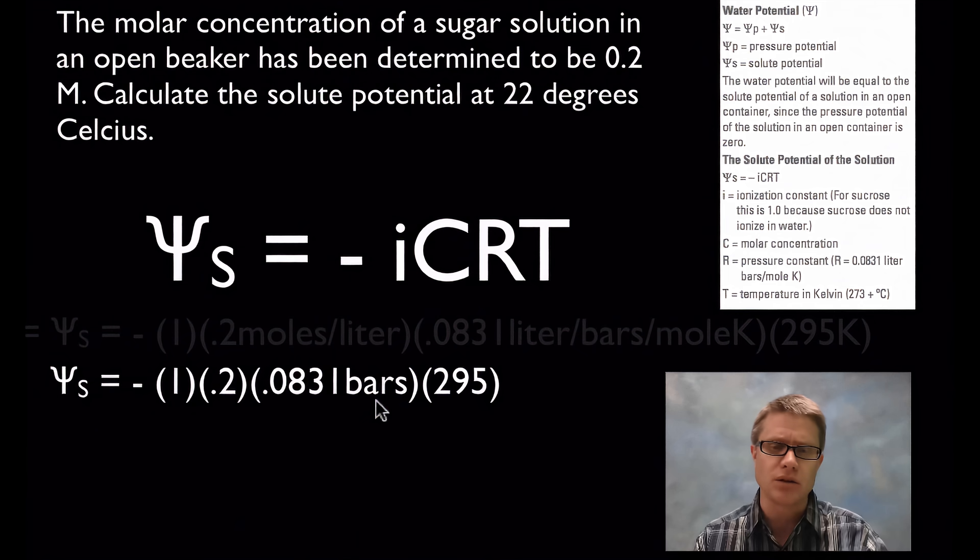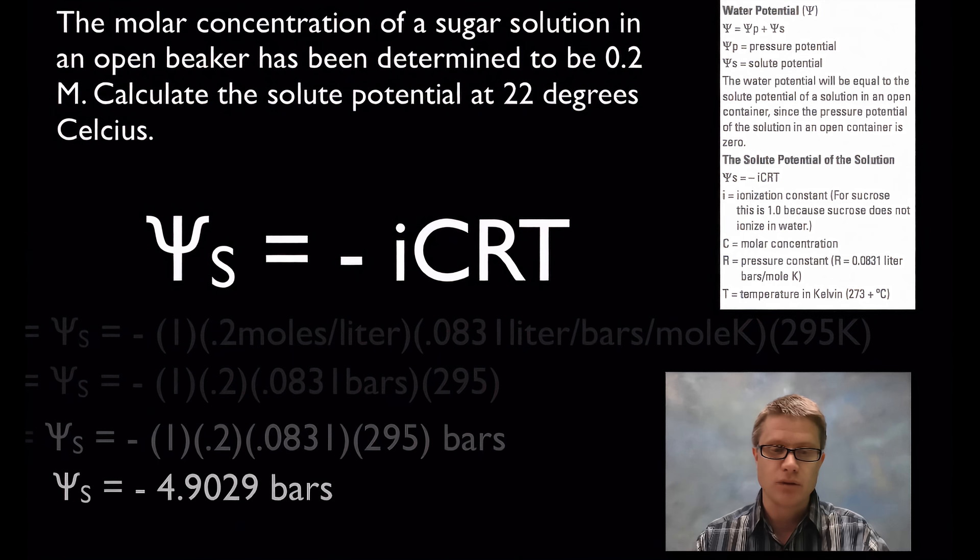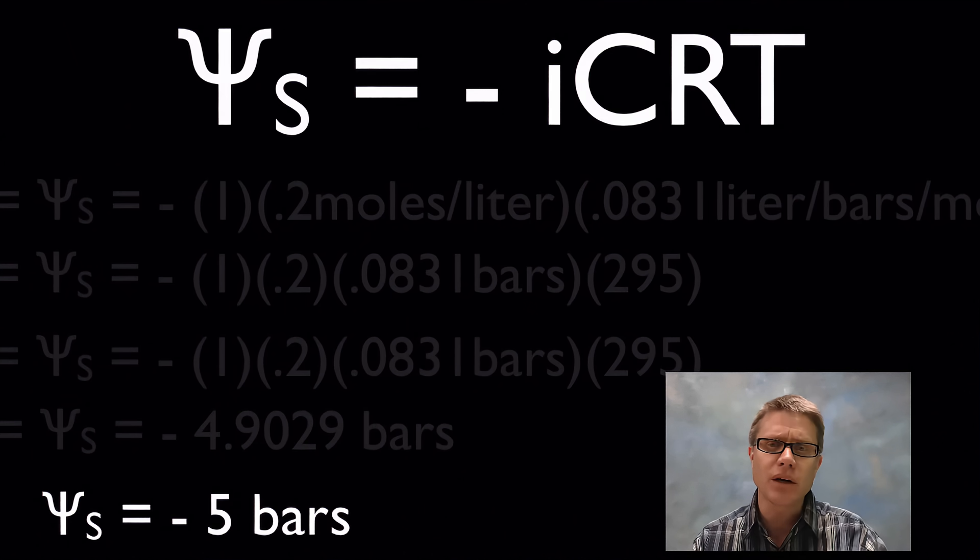Next thing I would do is I'd put the bars on the end and then I would multiply those values. What I get is negative 4.9029 bars. Now that's way too many significant digits. If I go back to my question, this one only has one significant digit, 0.2. And so my answer should really be negative 5 bars. So I've quickly figured out the solute potential.